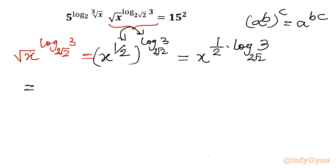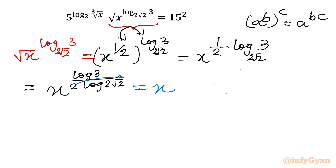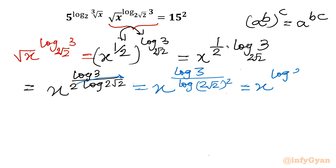Using the change of base property, this becomes x^(log 3 / (2·log(2√2))). That 2 becomes the exponent of 2√2, so we write x^(log 3 / log((2√2)²)). Since (2√2)² = 8, this simplifies to x^(log 3 / log 8), or equivalently x^(log 3 base 8). This completes our second simplification.